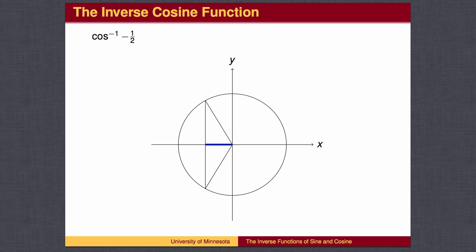A similar choice is needed for the inverse cosine. For any given number between negative 1 and 1, there are two angles between 0 and 360 with that given number as its cosine value. One is on the top of the circle, the other is on the bottom. We will choose the one on the top of the circle, so that the output of the inverse cosine function is always between 0 and 180 degrees.